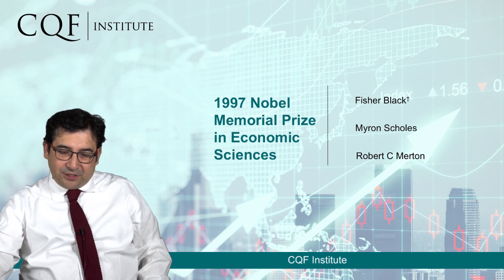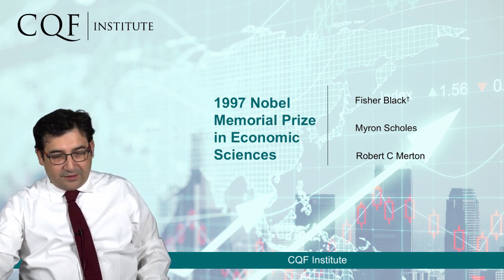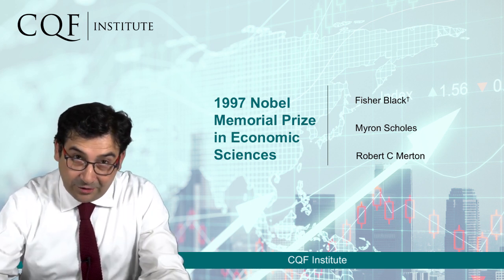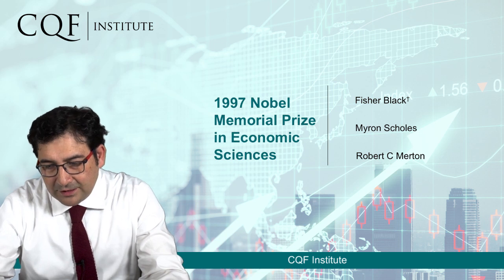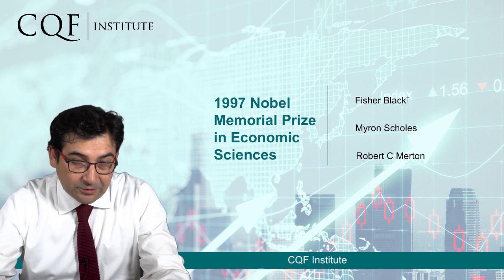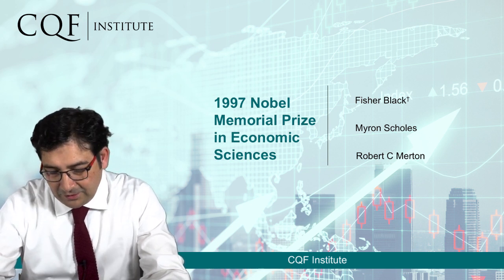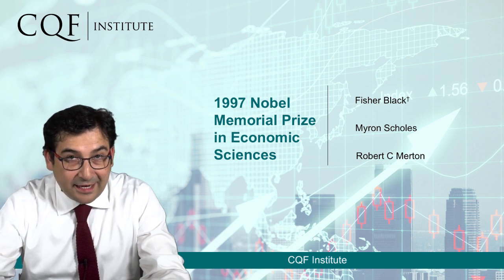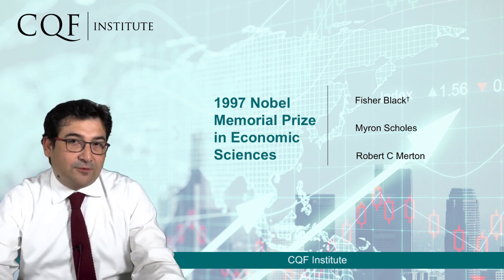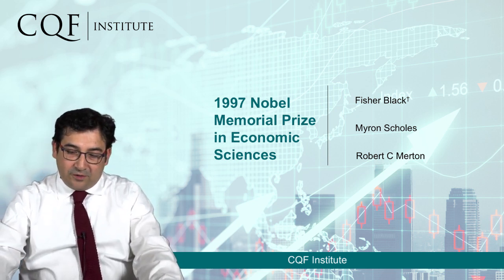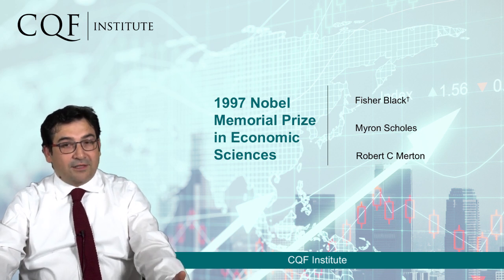The Black-Scholes formula obtained the 1997 Nobel Prize in economics. This prize was assigned to Myron Scholes and to Robert Merton, who also worked with the other two authors in the original development of the model. It was unfortunately not received by Fisher Black, who had died a few years before the Nobel Prize was awarded. Nevertheless, this formula is one of the main pillars of modern quantitative finance.